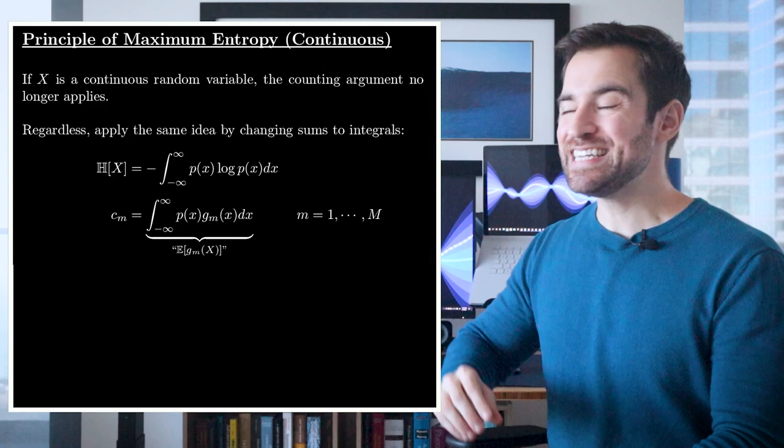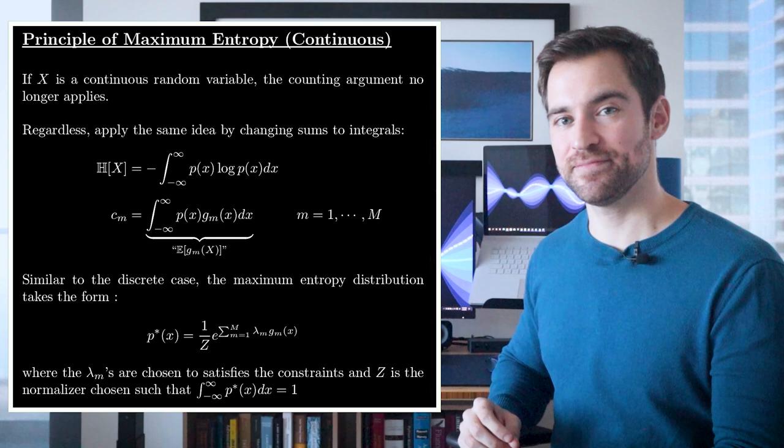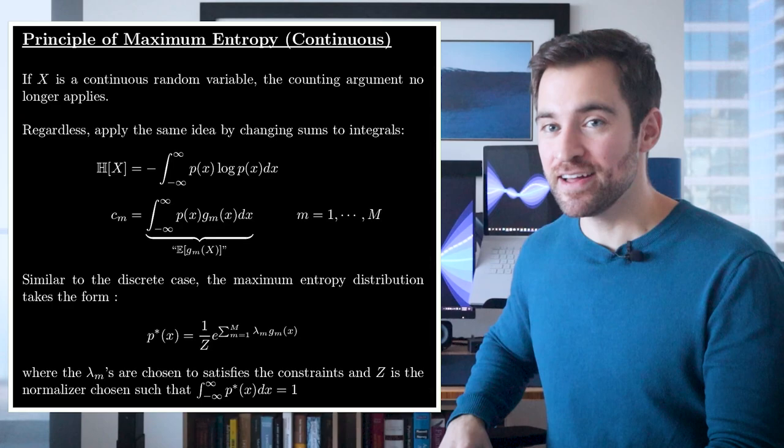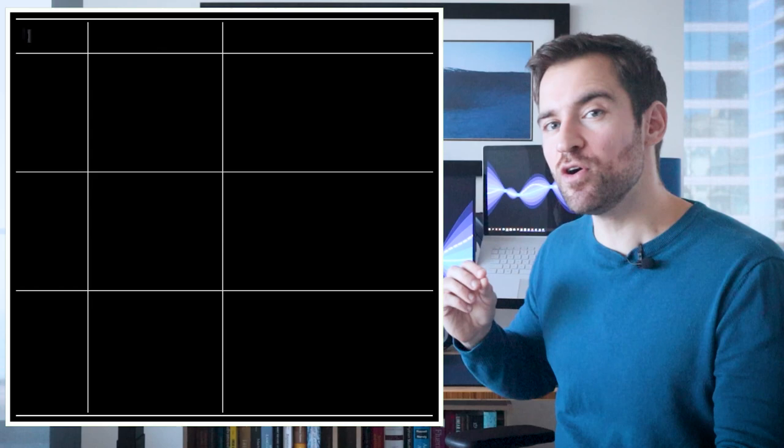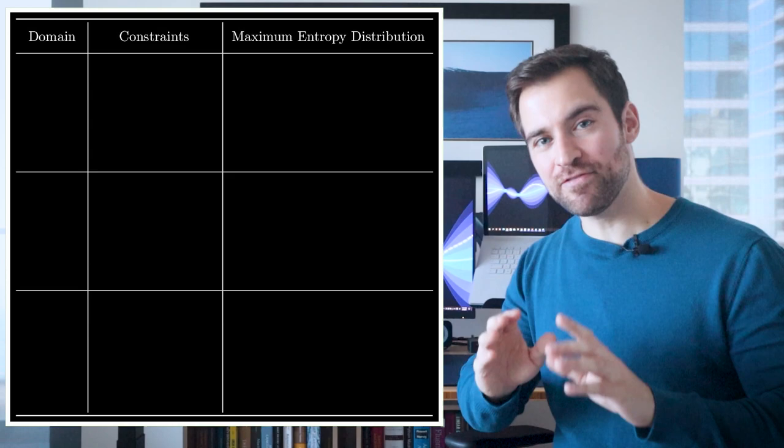In this case, our entropy changes to something called the differential entropy, and we can rewrite our constraints in a similar fashion. The distribution which satisfies our constraints and maximizes differential entropy takes the same form we saw earlier. And in this case especially, you most likely won't need to solve for these lambdas. That work is done for you. This is where things get interesting.